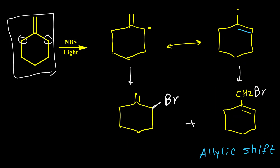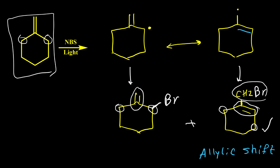This second product is also called the allylic shift product. If we want to know which of these products is the major product, normally the one where the double bond has more substitution is the major product. Here the double bond has two alkyl groups on the first compound, and the second compound has three alkyl groups on the double bond — so the second compound is our major product.